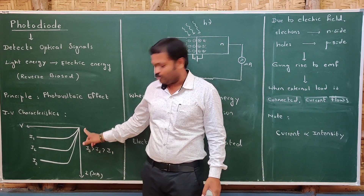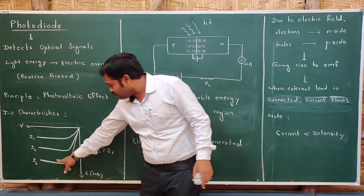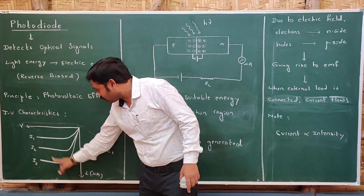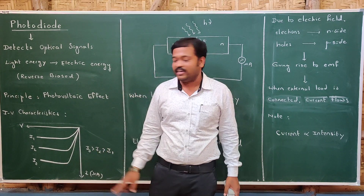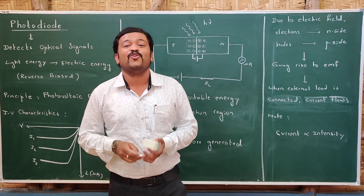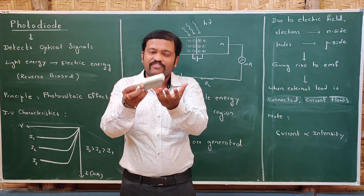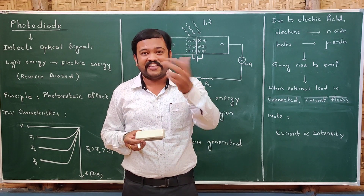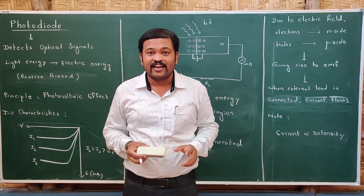As seen in the IV characteristics, as the intensity of light increases — I3 is more than I2 and I1 — the current also increases with intensity. This is the IV characteristic of a photodiode. When light falls on a photodiode, EMF is generated, electrons move, and current is produced. That is how the photodiode works.